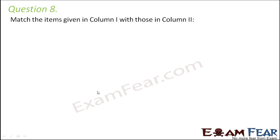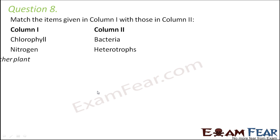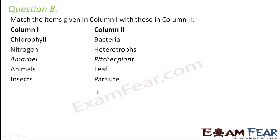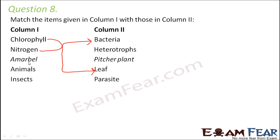Question number 8. Match columns 1 and 2. Chlorophyll — it is present in the leaf of the plant. Nitrogen — it is a macronutrient for the plant; they get nitrogen from the soil, and nitrogen-fixing bacteria fix nitrogen in the soil, so nitrogen matches with bacteria. Amarbel is a parasitic plant because it depends on other plants for its food, so it is a parasite. Animals are all heterotrophs because they depend directly or indirectly on plants for their food. Insects are prey for the pitcher plant, which is an insectivorous plant.